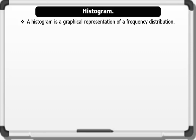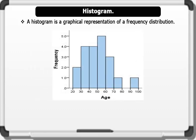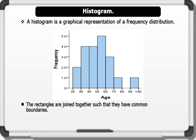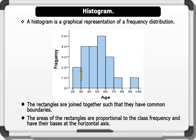The following features must be considered when drawing a histogram. One, in histogram the rectangles are joined together such that they have common boundaries. Two, the areas of the rectangles are proportional to the class frequency and have their bases at the horizontal axis.